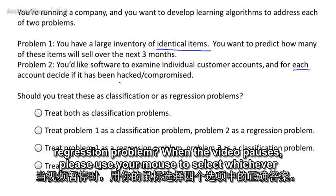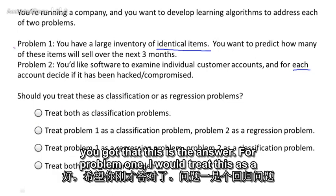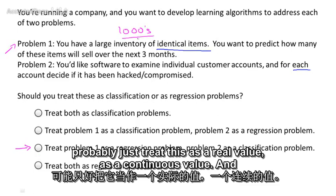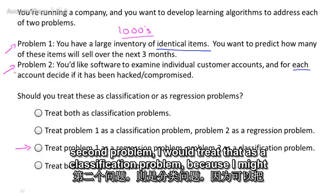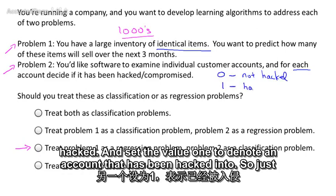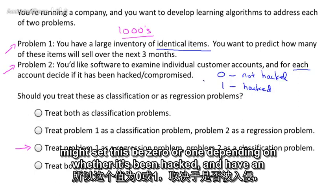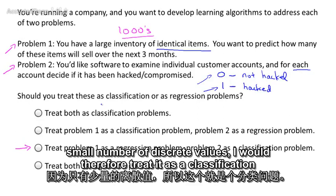Should each of these be treated as a classification problem or a regression problem? For problem one, I would treat this as a regression problem, because with thousands of items I would treat the number sold as a continuous value. For the second problem, I would treat that as a classification problem — setting zero to mean the account has not been hacked and one to mean it has been hacked, similar to zero for benign and one for malignant. Because that's a small number of discrete values, I would treat it as a classification problem.